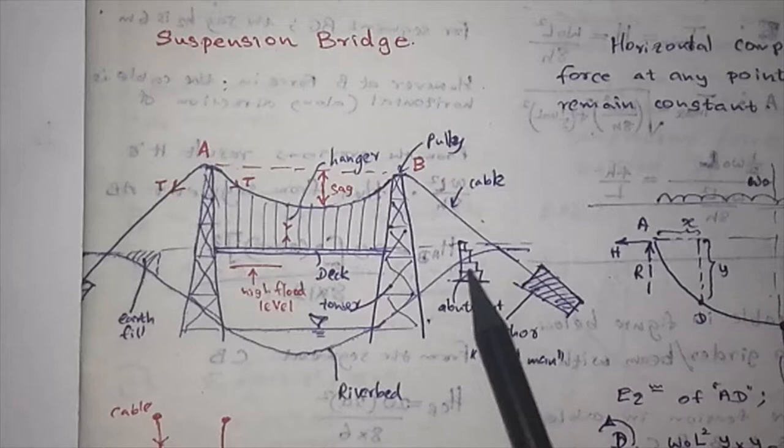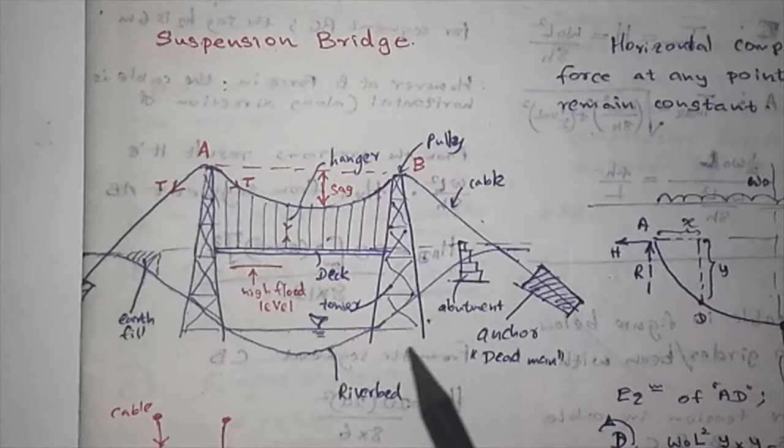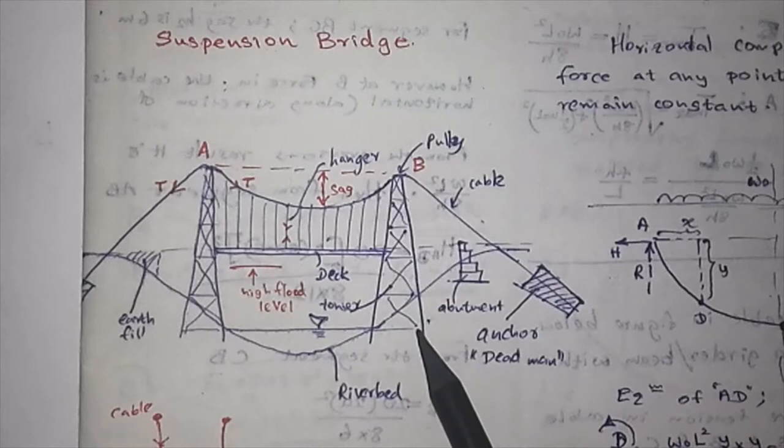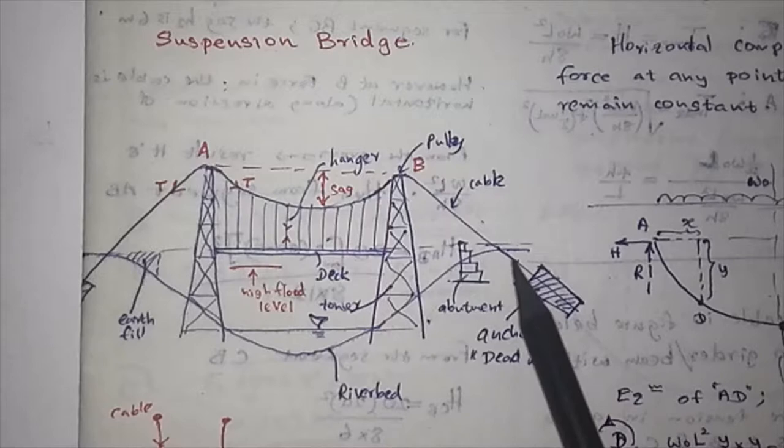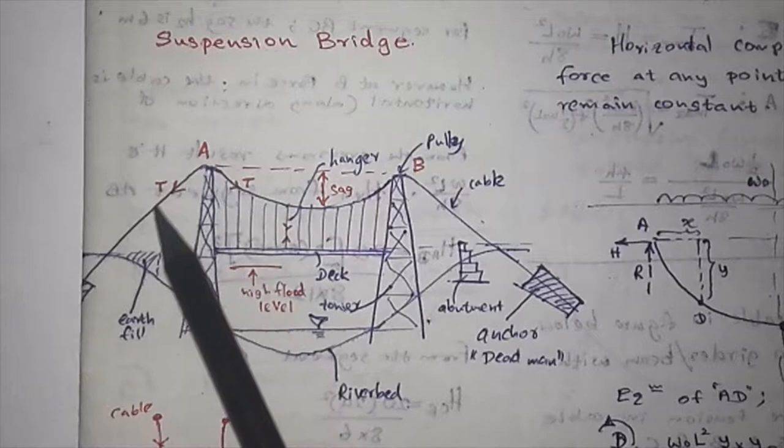Two towers or several towers are formed. At the top of the towers you have pulleys. The cable goes through those pulleys, taking this shape because of the loads. At the end of the cable you have the anchor, which we call a dead man.